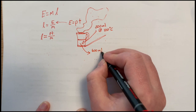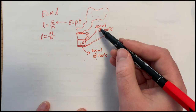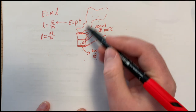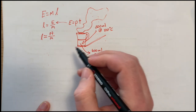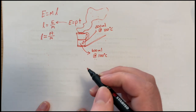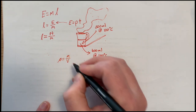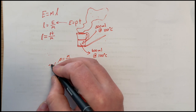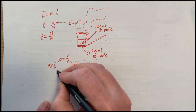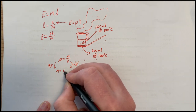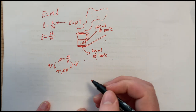After boiling, we might have, say, 400 millilitres of water remaining at 100 degrees. That means we know the volume of water that has boiled off. But we want the mass, not the volume, so we use the density equation: density equals mass divided by volume. Rearranging, mass equals density times volume.